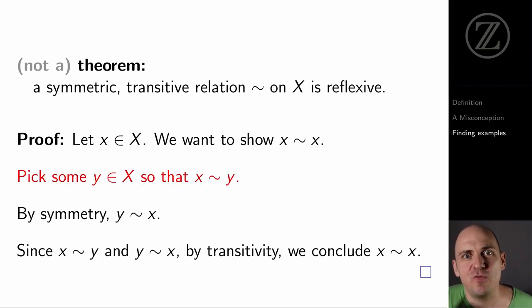Well, where exactly does this proof break down? It breaks down right here where we have to find a y so that x tilde y. And this is exactly why it's such a great thing to be thinking about the empty relation, because the empty relation is exactly a relation for which we can't find a y so that x tilde y.